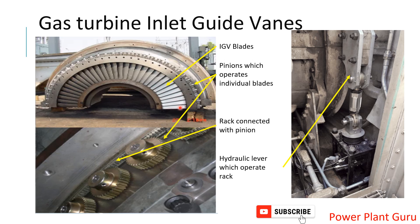Many people get confused with the IGV opening percentage. IGV opens from around 34 to 84 or 86 degrees — wherever we see the opening value, it is in degrees, not percentage. So 34 degrees is the minimum opening and 84 or 86 degrees is the full opening. This is how the IGV operates.